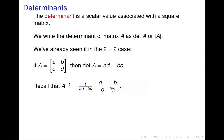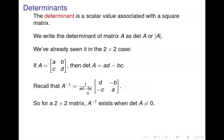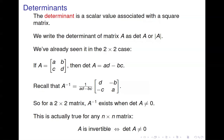We rearrange terms and negate a couple to get the inverse. Notice that, at least in the 2x2 case, the inverse exists when the determinant is not equal to 0. If AD minus BC equals 0, then A inverse does not exist. This is true for any square matrix — determinant not equal to 0 means the matrix is invertible, and if it's invertible, the determinant is not equal to 0. This is another installment of the invertible matrix theorem from section 2.3.